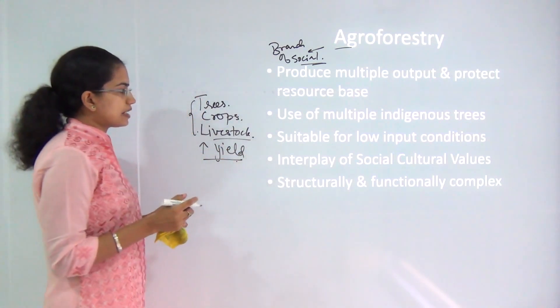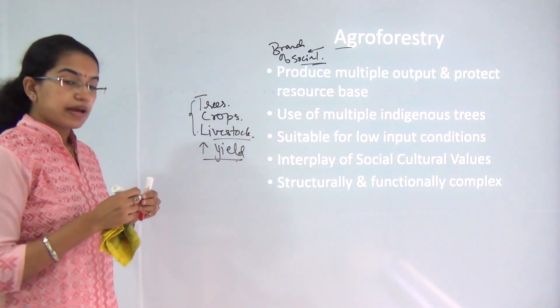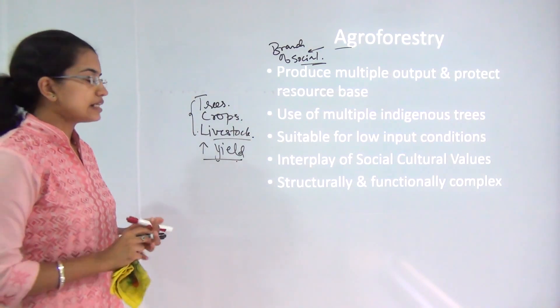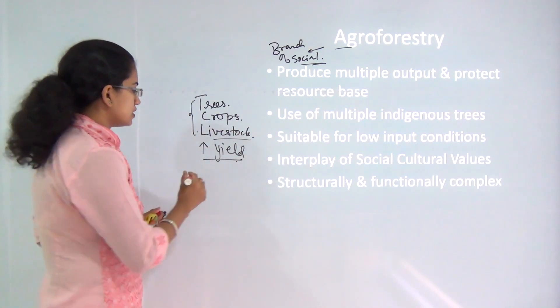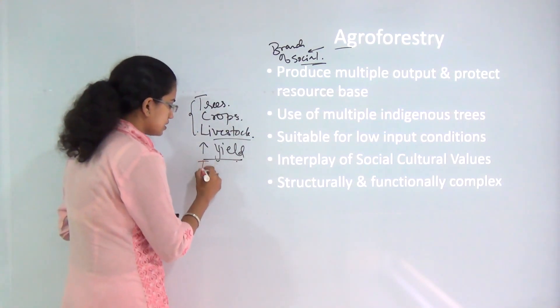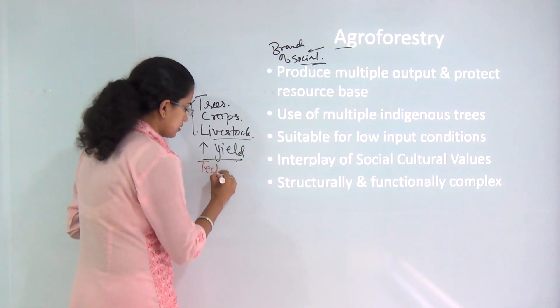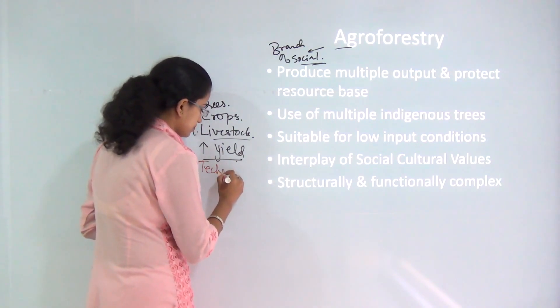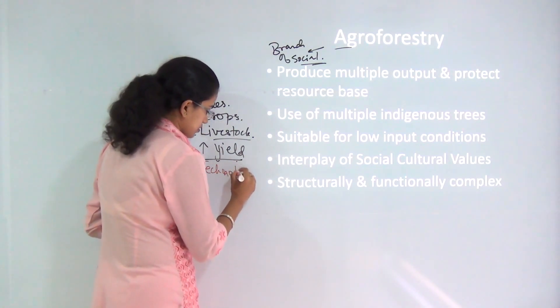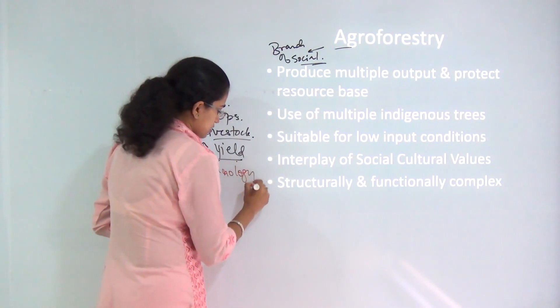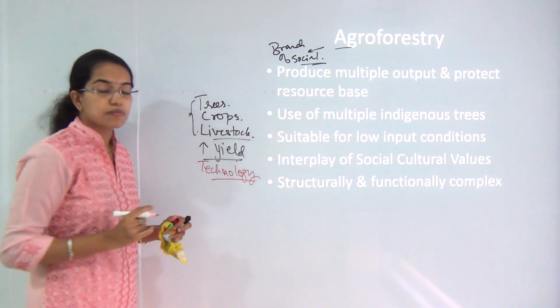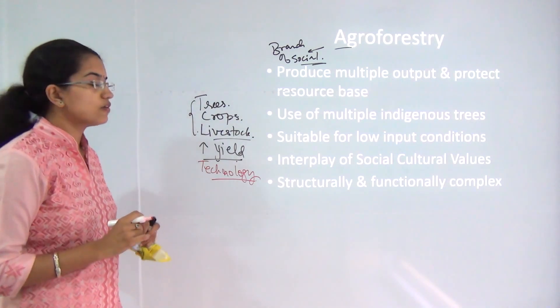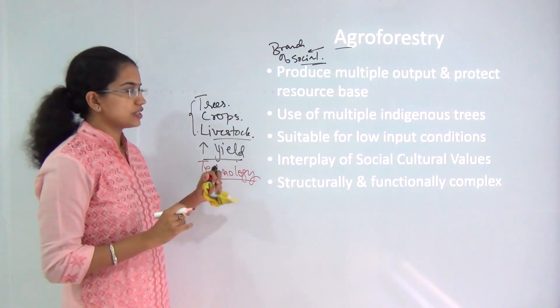To develop or maintain a sustainable balance and increase the yield, what we need to do is we need to improve technologically. So technology is very important in the case of agroforestry.